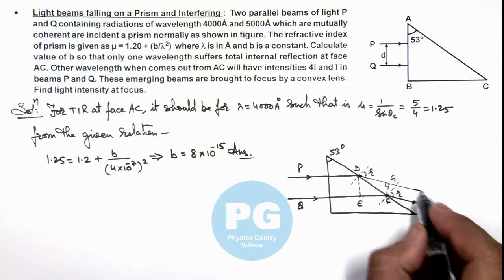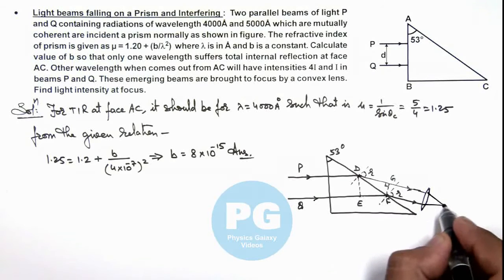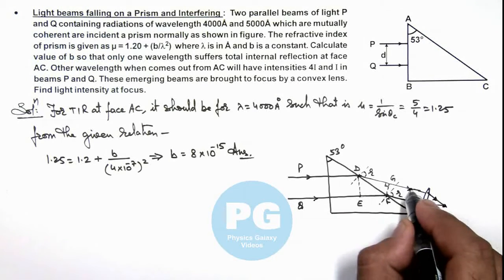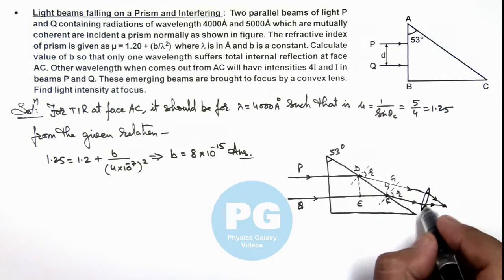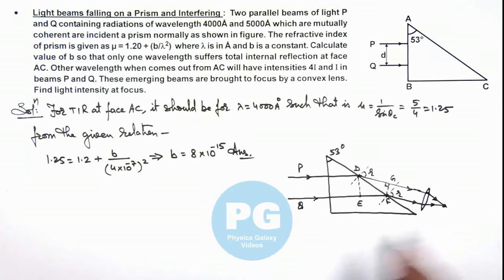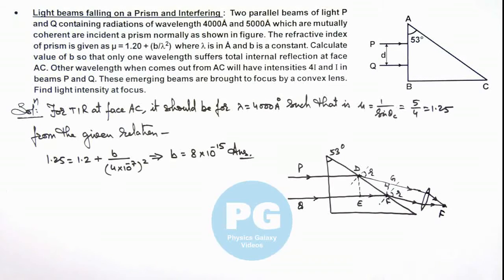And finally these two light rays are brought to focus by a convex lens. We already studied in theory that convex lens never introduces any path difference. So whichever path difference was there before incidence on lens the same will be continued till the light rays will interfere at focus.